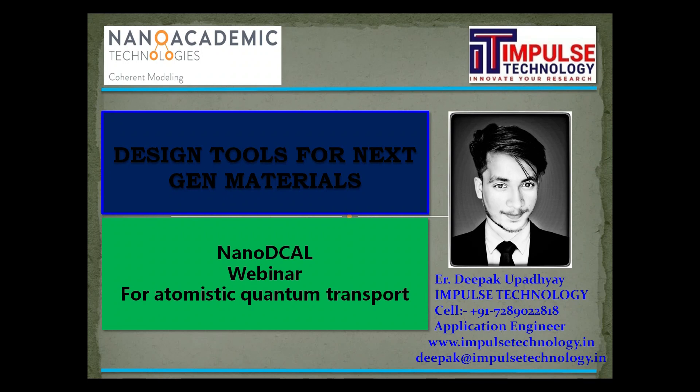Hello everyone, myself Deepak Upadhyay from Impost Technology Gurgaon. Today I will show you how to calculate the electronic properties of nickel oxide by using DFT and the Hubbard method DFT+U. As you know, density functional theory is one of the most convenient computational tools for the prediction of properties of different classes of materials, although its accuracy is acceptable as long as structural and cohesive properties are concerned. It dramatically fails in the prediction of electronic and other properties of semiconductors. To solve this problem, the Hubbard model DFT+U was introduced, which is computationally convenient for accurate calculation of electronic structure.